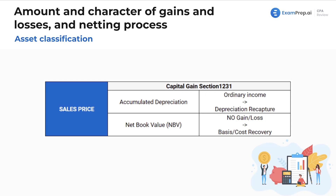Here's a nice overview — we're going to go through a bunch of different graphics to help you remember these various classifications. Here is a graphic for capital gain section 1231. Most of these are going to be on your memorization guide as well, so if you want to take a look there, you can reference that.